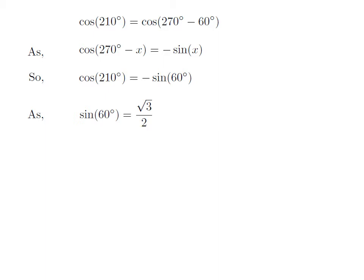We know the value of sine of 60 degrees is equal to square root of 3 upon 2. So, the value of cosine of 210 degrees is equal to minus square root of 3 upon 2.